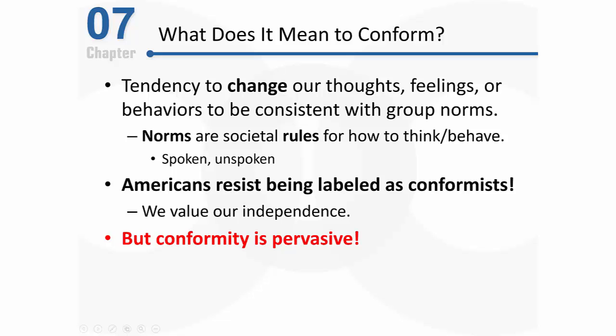Conformity is pervasive — you don't need to look far to find it. Look at our appearance, the clothes we wear, hair, makeup — there's not all that much variation. Most of us also conform to social roles. The same person behaves differently as a parent, as a store manager, or as a student. In each situation you're conforming to a different social role and performing different behaviors.